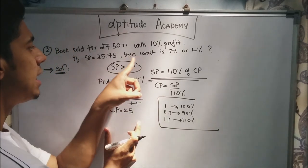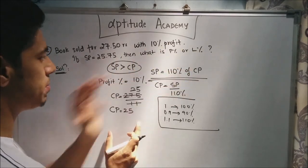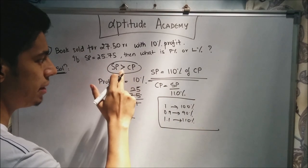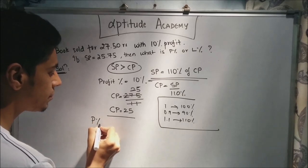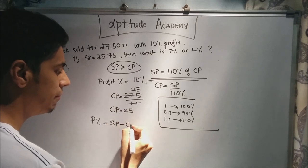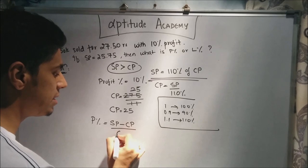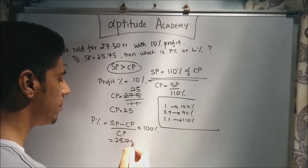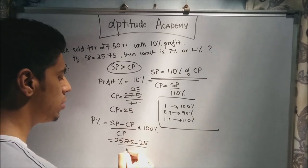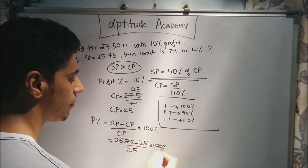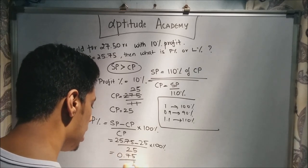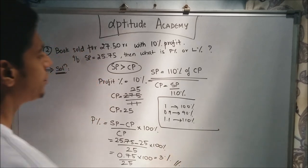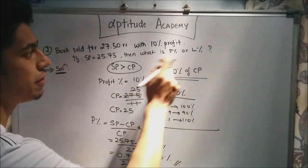Now, if the selling price is 25 rupees 75 paise, what is the profit or loss percentage? Your cost price is 25 rupees and selling price is 25.75 rupees, so SP is greater than CP — definitely a profit. Profit percentage equals SP minus CP upon CP into 100, which is 25.75 minus 25 upon 25 into 100. This gives 0.75 upon 25 into 100, which comes out to 3%. So if you sell the book at 25 rupees 75 paise, you will get a 3% profit.